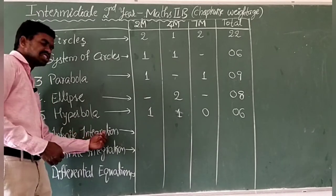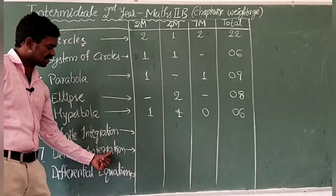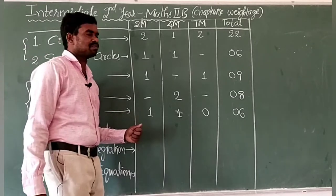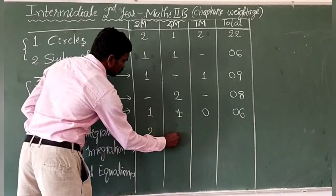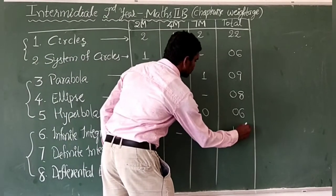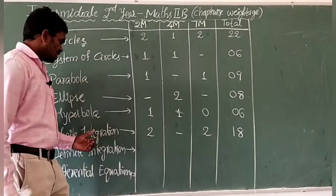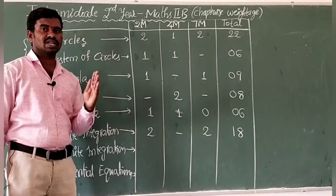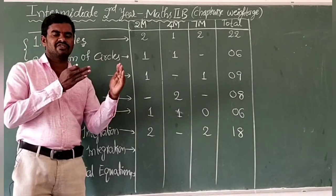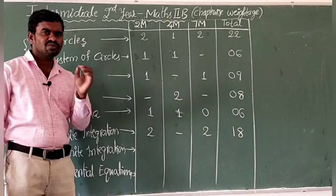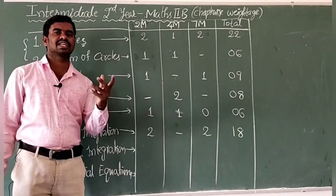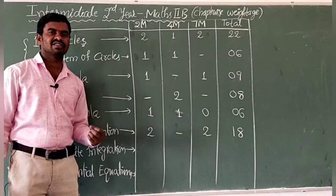Next is Indefinite Integration — generally called the integration chapter. The second is Definite Integration and the third is Differential Equations. Indefinite Integration is the second largest chapter. From this chapter we get two 2-mark questions, no 4-mark question, and two 7-mark questions — so 4 plus 14 = 18 marks. Since we completed differentiation in Maths 1A, those formulas are useful here. If you know derivatives like d/dx(sin x), d/dx(cos x), d/dx(x^n), d/dx(a^x), you can apply them to find integrals.